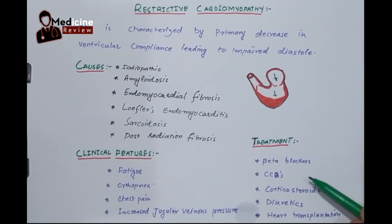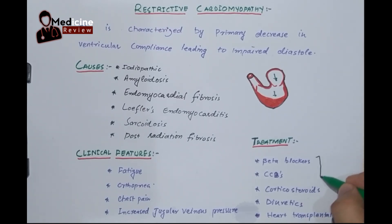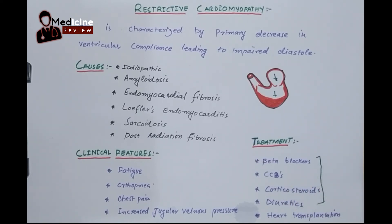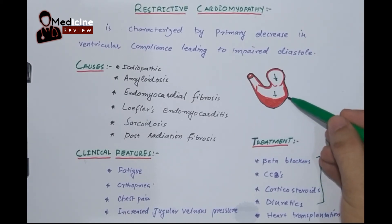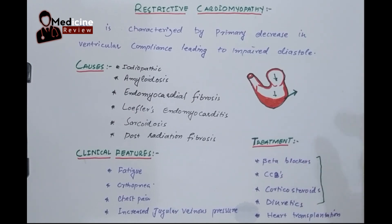Treatment is divided into conservative and definitive options. Conservative options include beta blockers and calcium channel blockers, which reduce the workload on the heart. Corticosteroids can be given if there is amyloidosis or fibrosis in the myocardium, to reduce inflammation and fibrosis. Diuretics are given to reduce cardiac load. The definitive treatment is cardiac transplantation, which is somewhat theoretical, and another option is myomectomy — where the fibrosed part of the myocardium is surgically removed.